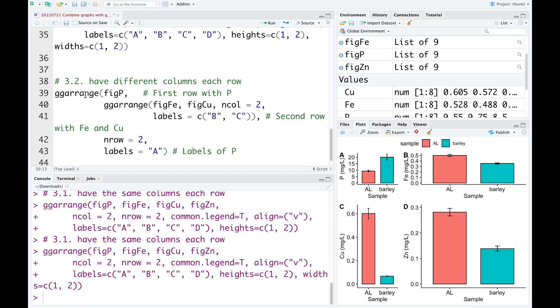We still need to use ggarrange with figure P. And after that, we use ggarrange again with figure iron and figure copper, and the number of columns is 2. The label here is B and C. And after that, we use the number of rows is 2, and the label for the first one is A. That is the label for P. Now I run this code.